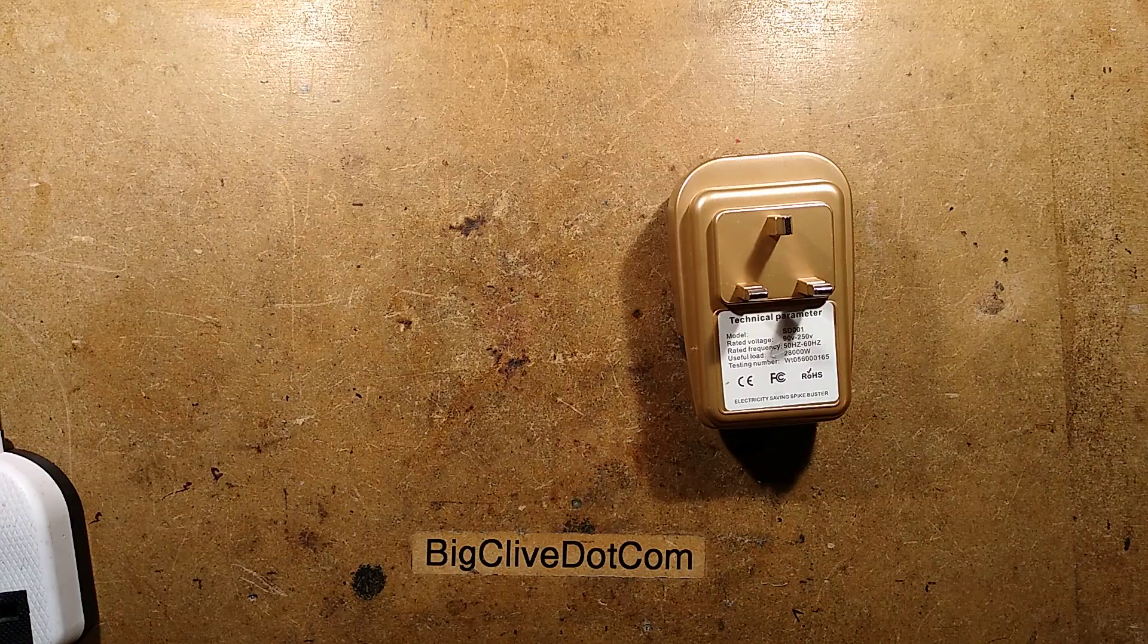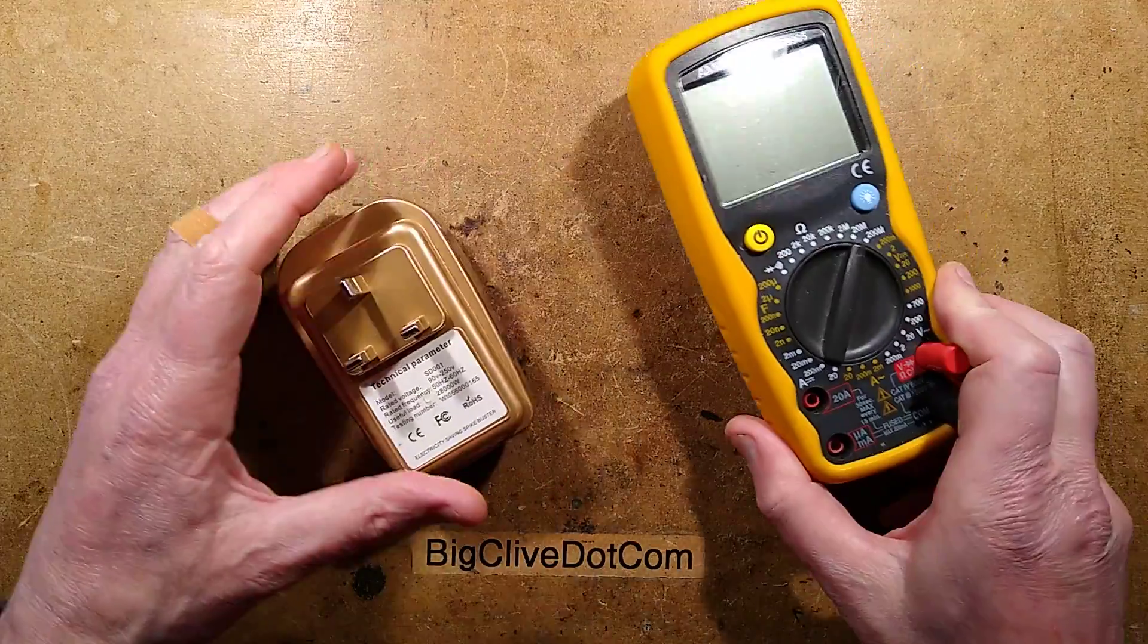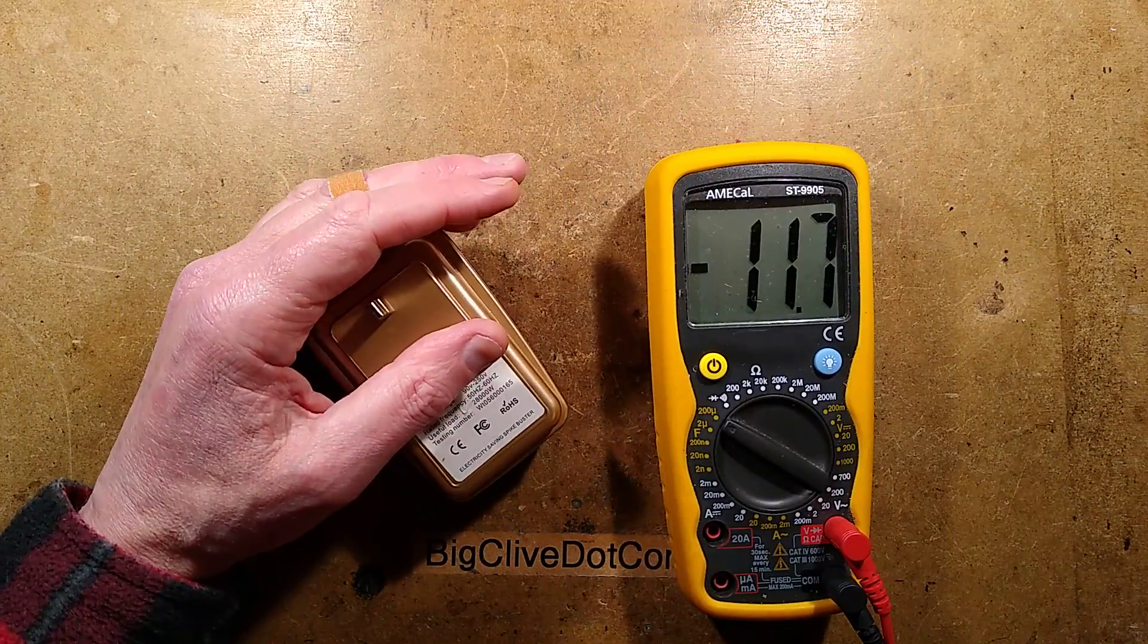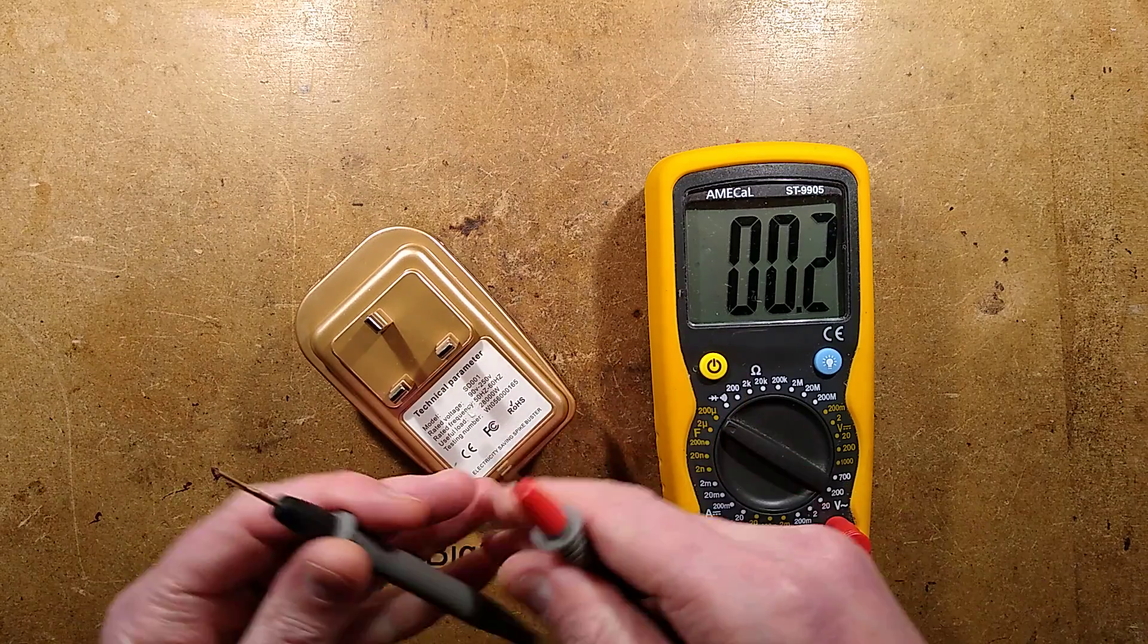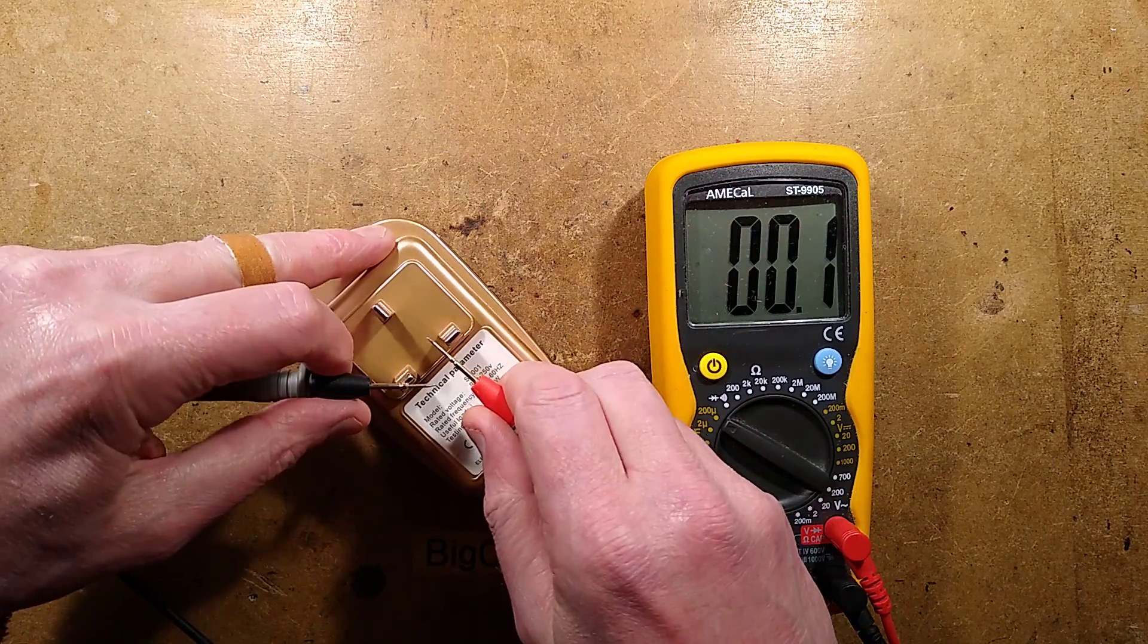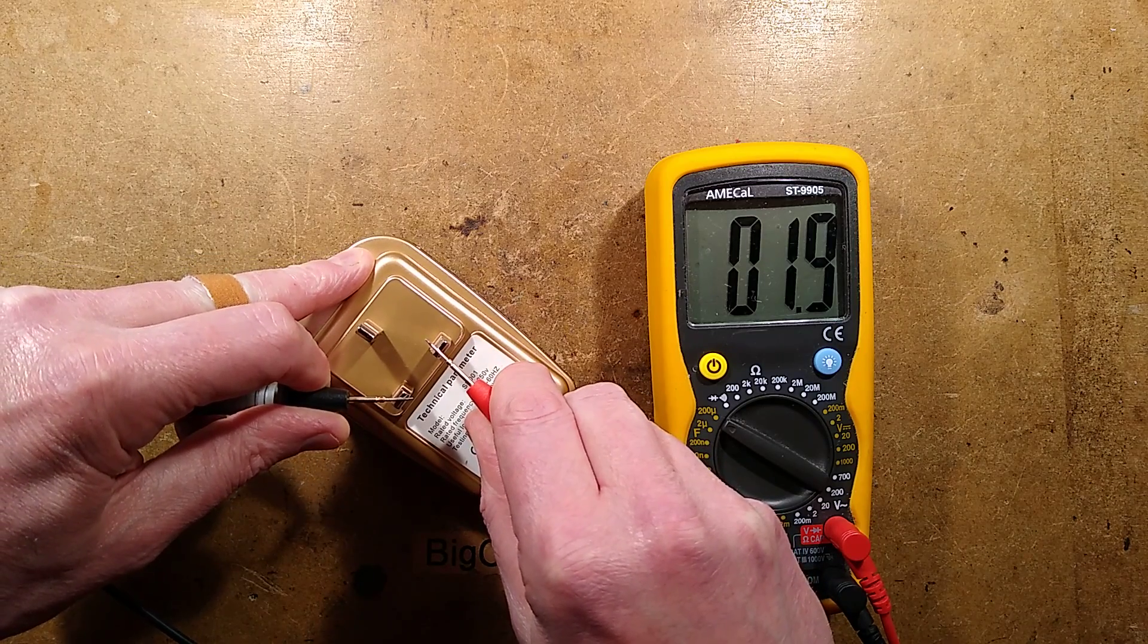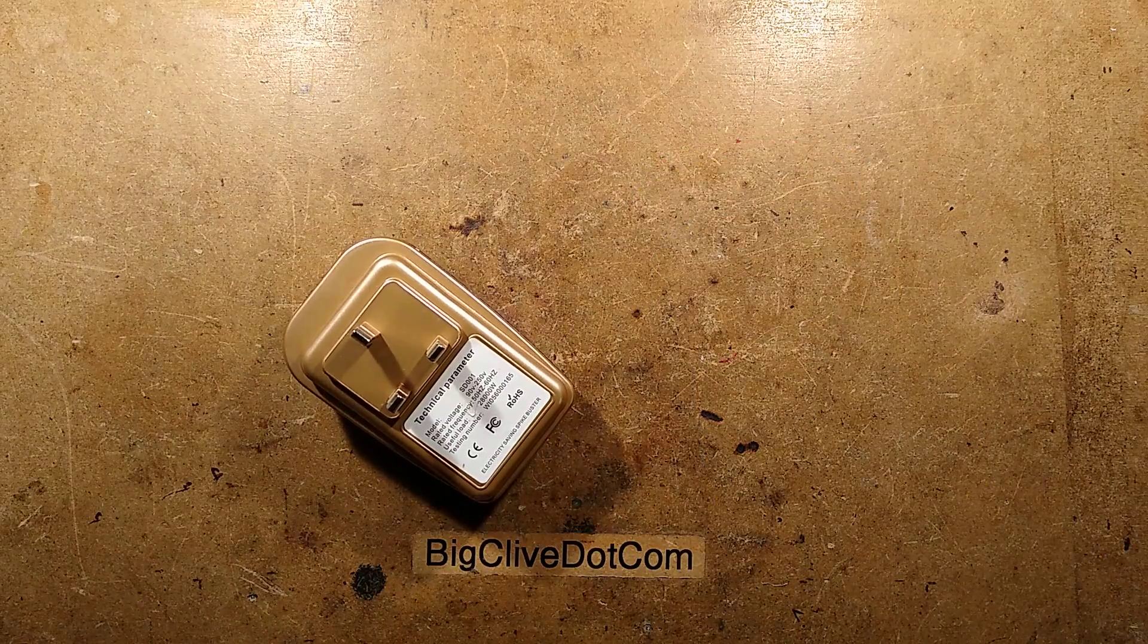So let's get that out of the way and take a closer look at this. I'll just make sure that is totally discharged and we'll set it to 200 microfarads. Now what these units do, just to justify their existence, is they do often have a capacitor in it, sometimes not connected. This one has a 2 microfarad capacitor in it, which is nice that it's connected.